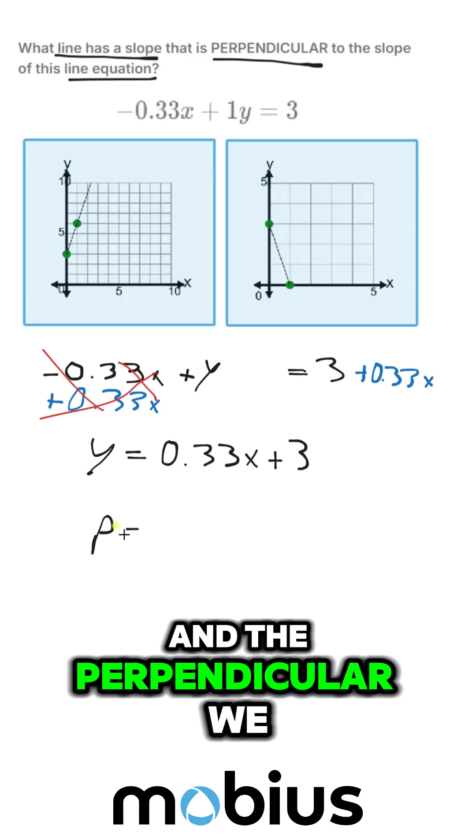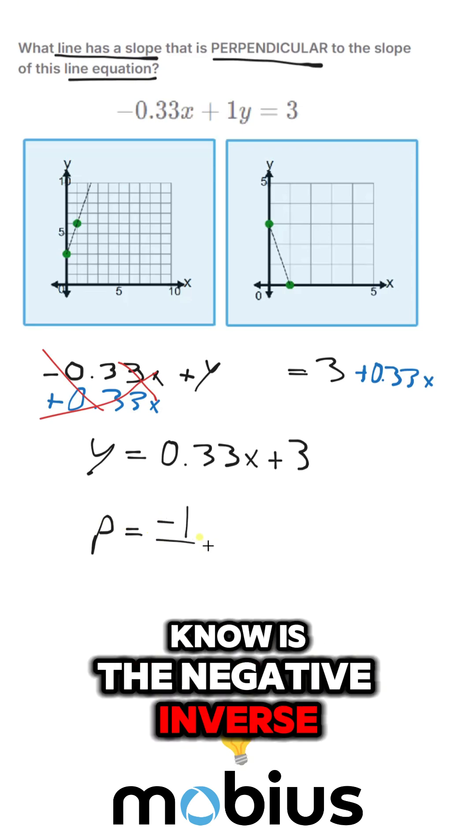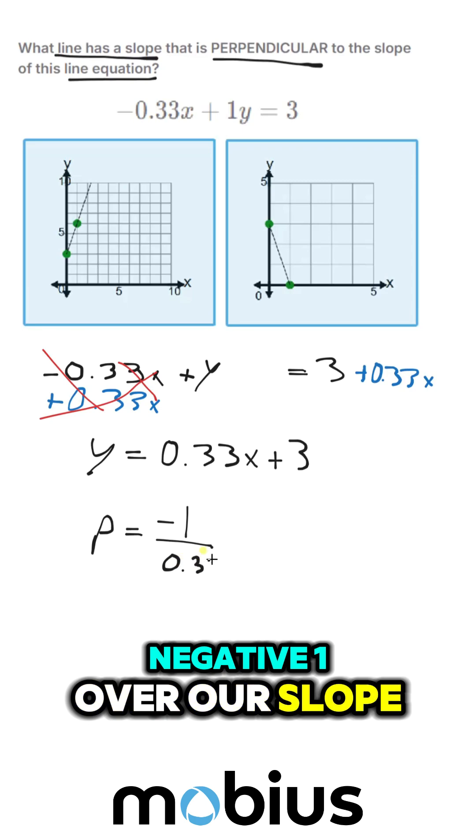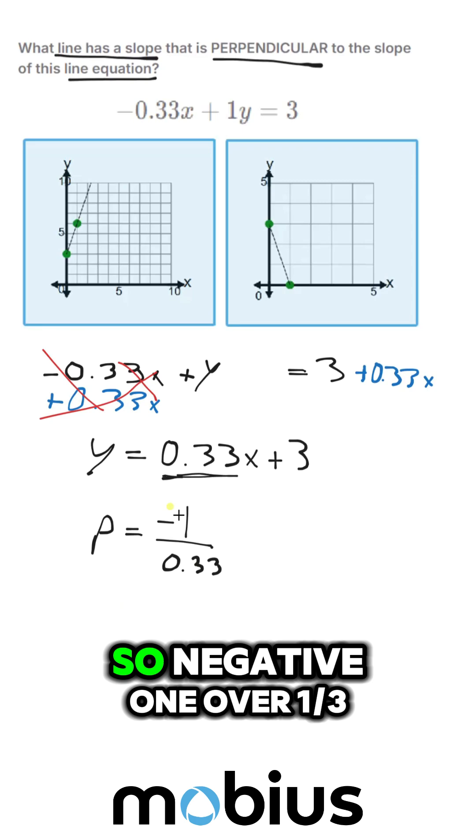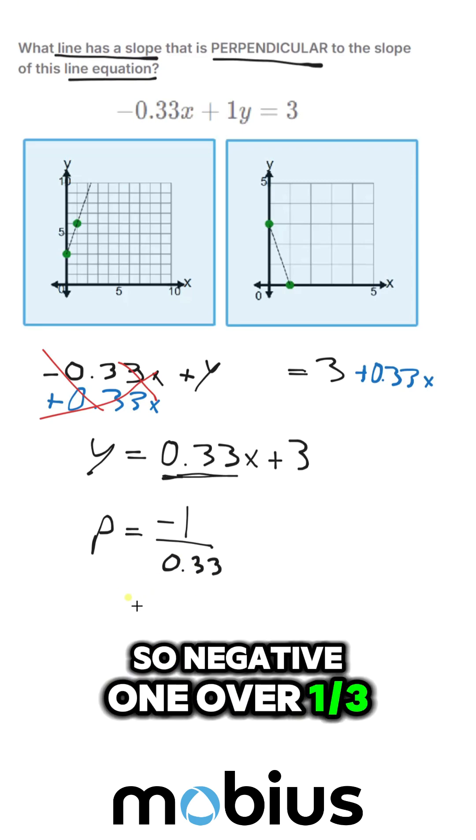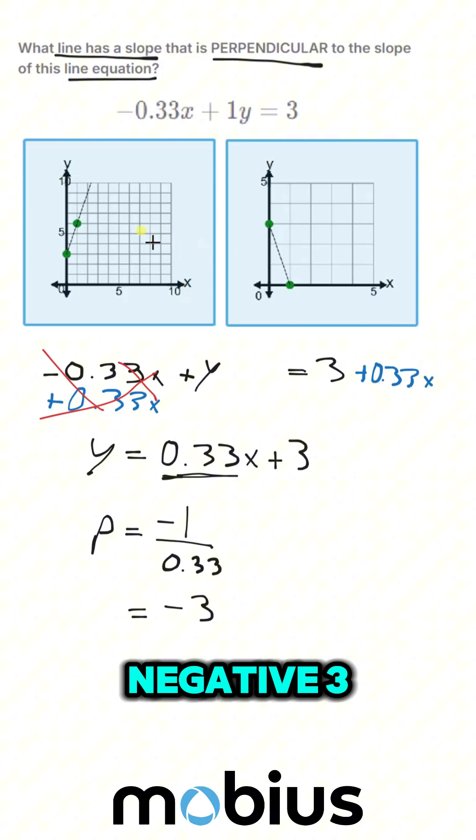And the perpendicular we know is the negative inverse, negative 1 over our slope. This is our slope here, y equals mx plus b. So negative 1 over 0.33. So that is equal to a slope of negative 3.